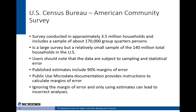The 90 percent confidence level refers to the level at which the errors are calculated, meaning we would expect that if all possible samples of the population could be taken, 90 percent of the resulting estimates' associated confidence intervals would contain the true population estimate. If the margin of error is small relative to our estimate, then we know there's a high probability that our estimate is close to the true population figure. However, if the margin of error is large relative to the estimate, then our estimate may not accurately reflect the true population. As we'll see, ignoring the margins of error associated with these estimates can lead to misinterpretation of the data and incorrect analyses.